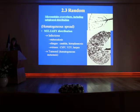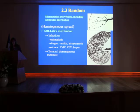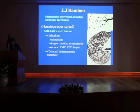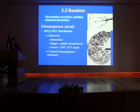The third distribution is the random distribution, where you will find nodules everywhere. There are two different etiologies: infection and tumor. To differentiate between miliary tuberculosis and miliary carcinomatosis — in miliary carcinomatosis you will have nodules of different sizes, whereas in miliary tuberculosis all micronodules have the same size.